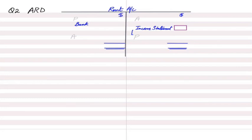We rented the premises on 1st April and our year ends on 30th November. Counting from April to November — April, May, June, July, August, September, October, November — that is eight months. So in this year we have used the premises for eight months, meaning we charge eight months' worth of rent to the income statement.